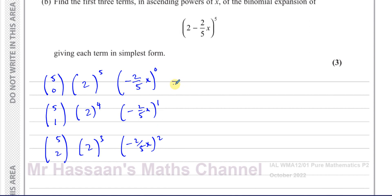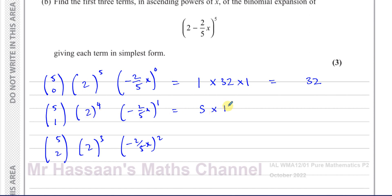Now computing the values: 5C0 is 1, times 2 to the power 5 which is 32, times negative 2 fifths x to the power 0 which is 1. So the first term is 32. Then 5C1 is 5, times 2 to the power 4 which is 16, times negative 2 fifths x. The 5s cancel, giving 16 times negative 2, which is negative 32x. So the second term is minus 32x.